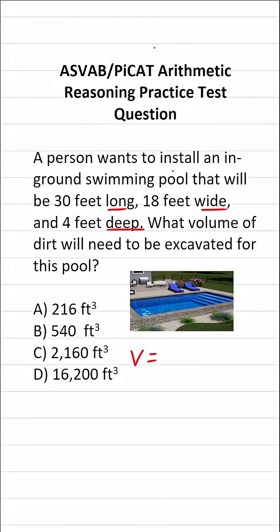On the ASVAB and PiCAT, you're not given a reference sheet or a calculator. So you do have to commit some of these basic formulas to memory. The formula to find the volume of a rectangular prism is length times width times height.